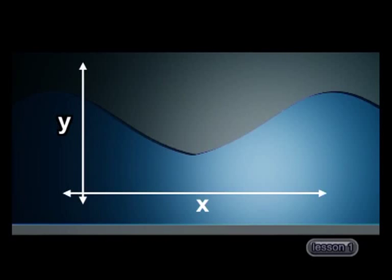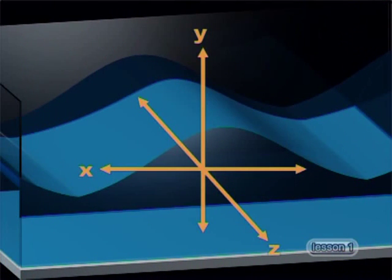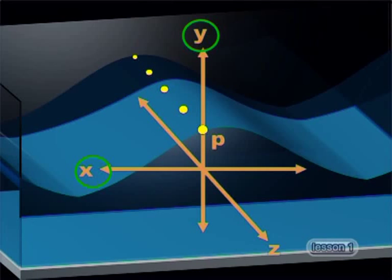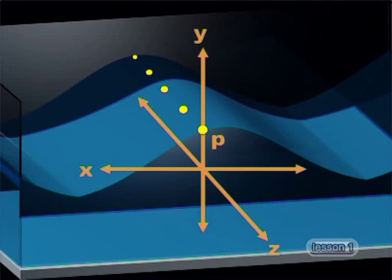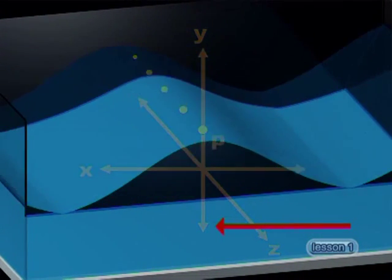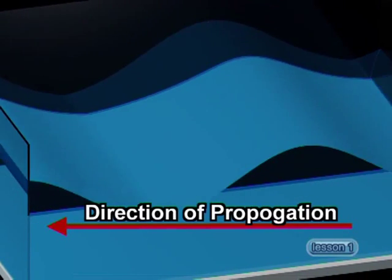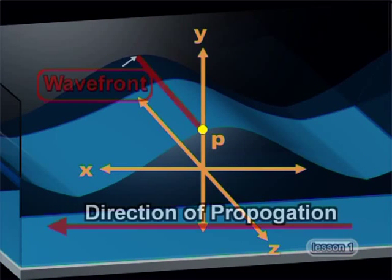By looking at these waves from the side view, they look just like the two-dimensional waves we studied previously — they have an X and a Y component. But there is an extra dimension to the water wave, which we can only see when we look at the wave from above. Notice there isn't just one crest at point P — behind P there's a whole series of crests too. This water wave therefore has a Z component as well as X and Y, making it a 3D wave. We can use an arrow to show the direction of movement of the energy the wave is carrying — we call this the direction of propagation of the wave. All parts of the wave that are in phase with each other form a wave front, which is always at right angles to the direction of propagation.